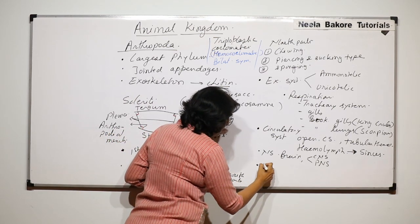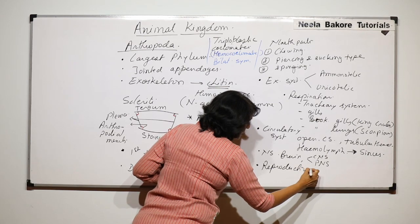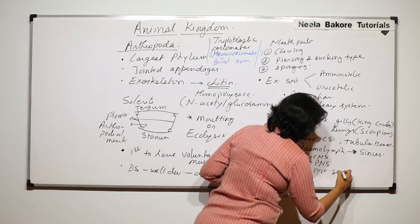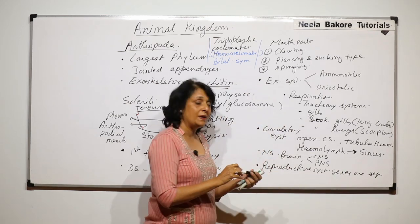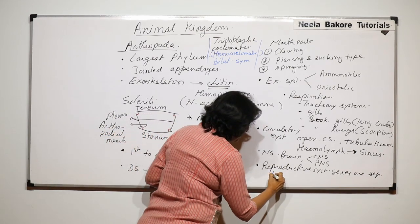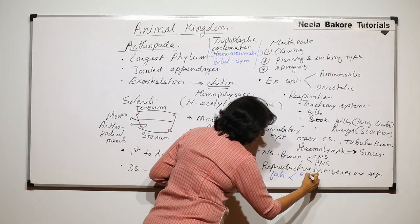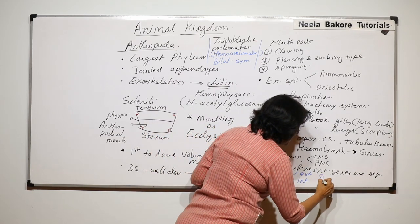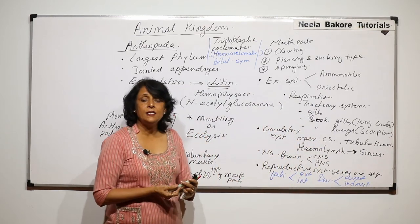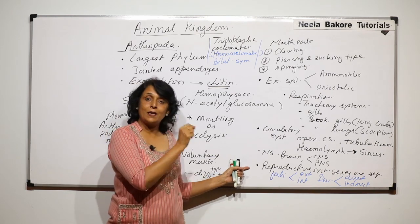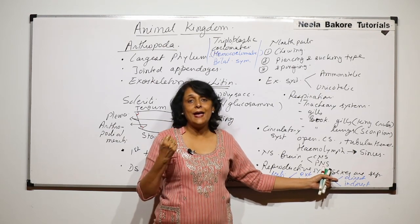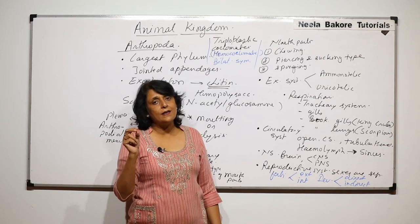In the reproductive system, the sexes are separate — there is a male arthropod and a female arthropod. Fertilization may be internal or external. Development can be direct or indirect. Direct development means what comes out of the egg is a tiny fully-formed organism, as in cockroaches — what comes out is called a nymph, which resembles the adult cockroach except it lacks developed sex organs and wings.